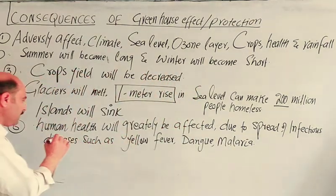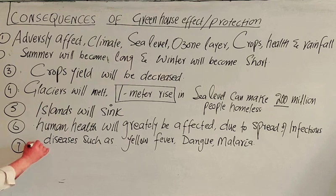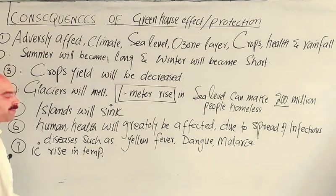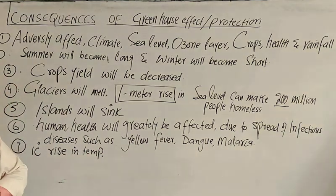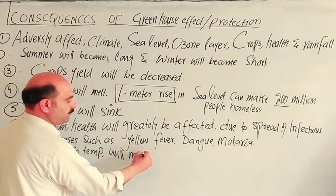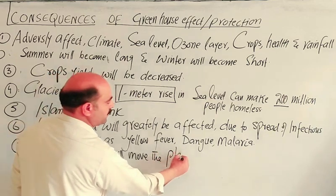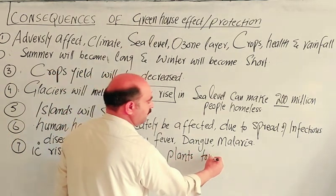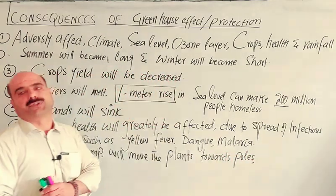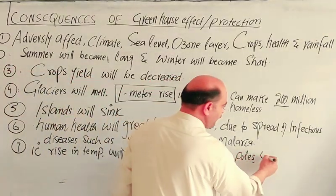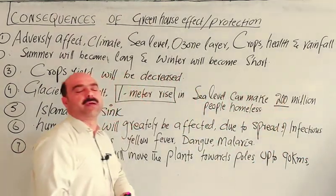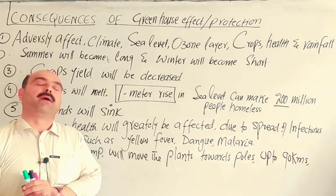To clarify: a 1 degree Celsius rise in temperature means that plants and trees will need to migrate up to 90 kilometers toward the North Pole or South Pole regions to survive. This shift in vegetation zones is a serious consequence of global warming and the greenhouse effect.